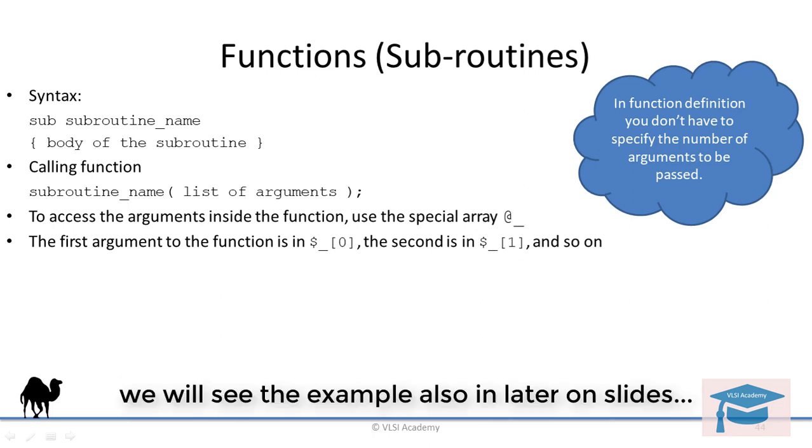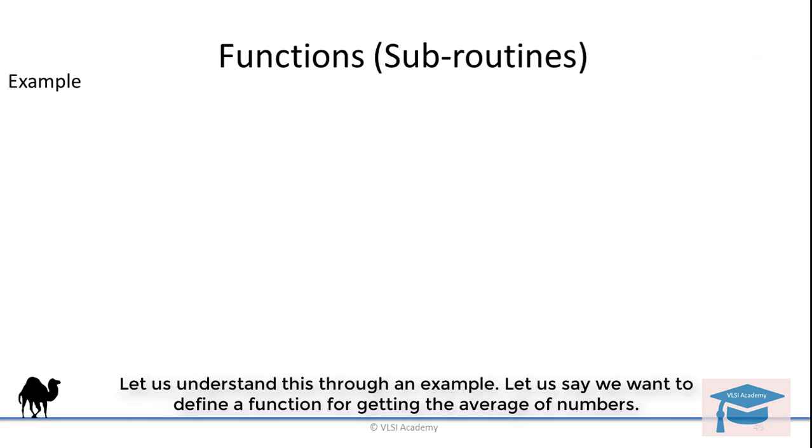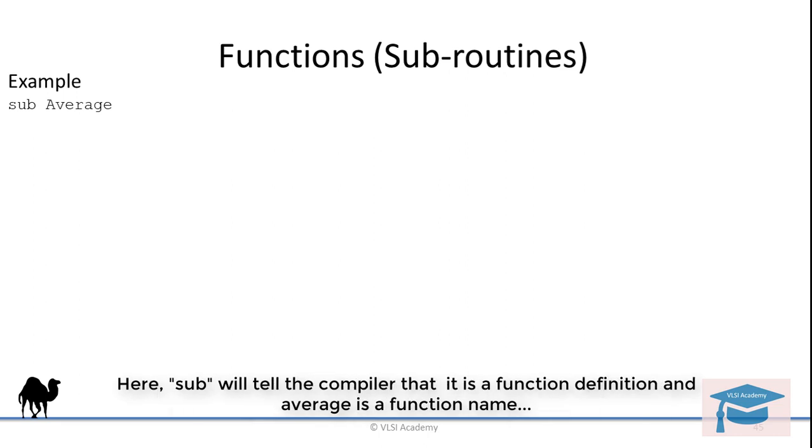We will see examples in later slides also. Let us understand this through an example. Let's say we want to define a function for getting the average of numbers. Here, sub will tell the compiler that it is a function definition and average is the function name.